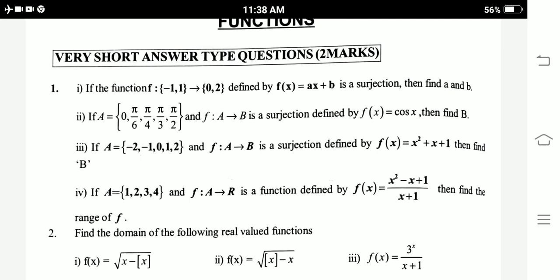If A = {0, 5π/6, 5π/4, 5π/3, 5π/2} and f: A → B is a surjection defined by f(x) = cos x, then find B.